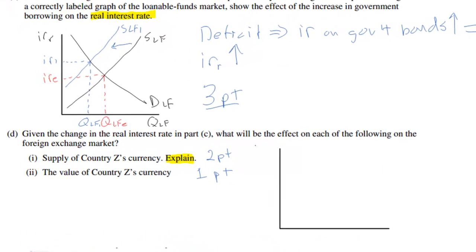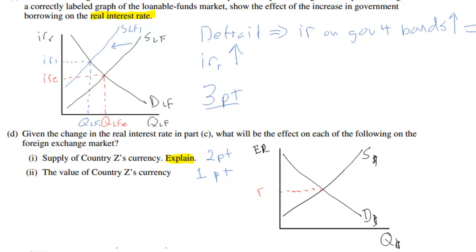Let's draw a graph showing the foreign exchange market for country Z's currency. In any foreign exchange market diagram, you label the vertical axis exchange rate (ER) and the horizontal axis the quantity of the currency — I'm going to call this currency the dollar. The demand for the country's currency is downward sloping, the supply is upward sloping, and the equilibrium exchange rate ERE is at their intersection. In part C we saw that the real interest rate increased — so what will be the effect on the foreign exchange market?